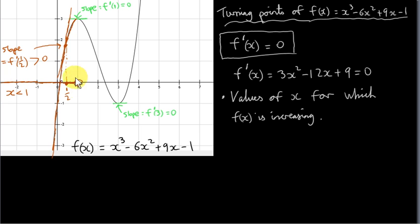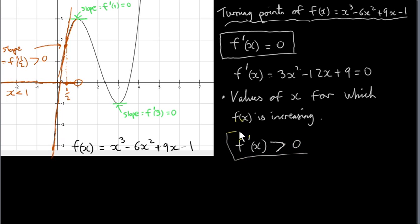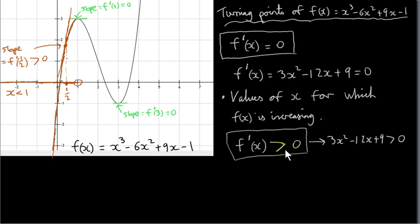We do not include x equals 1 in our range because at x equals 1 the derivative is equal to 0. We want the derivative to be strictly greater than 0. So the condition for f(x) to be increasing is that f prime of x is greater than 0 over those values of x, meaning we are solving the quadratic inequality 3x squared minus 12x plus 9 greater than 0. And x less than 1 is not the only range — for values of x greater than 3, f(x) will also be increasing.